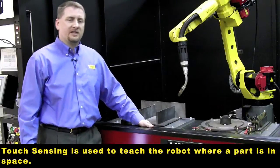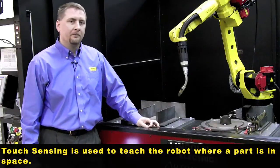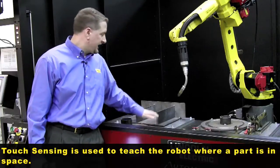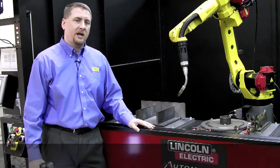The way touch sensing works is that the welding power supply will induce a small voltage on the weld wire, and when the weld wire makes contact with ground, the robot will automatically record where that position is in space.